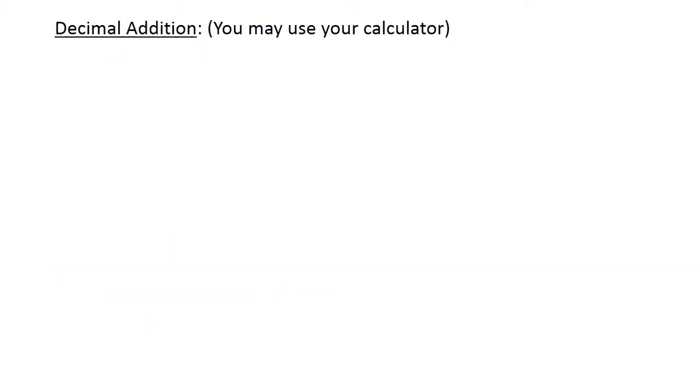Decimal addition. You may use your calculator to check all answers. 14.58 plus 12.07 equals 26.65.